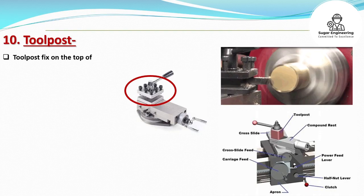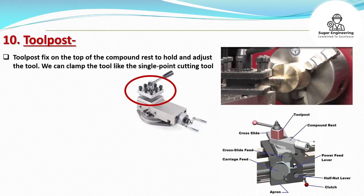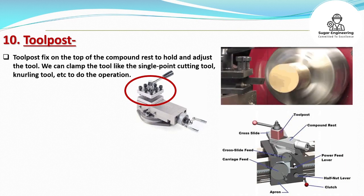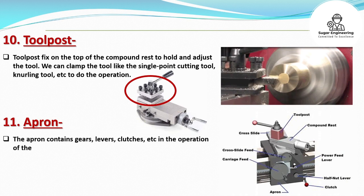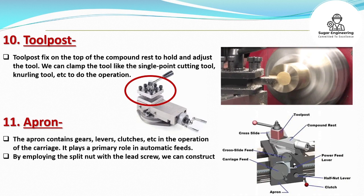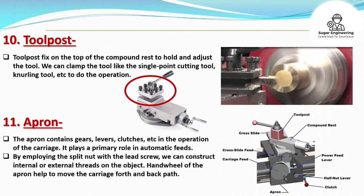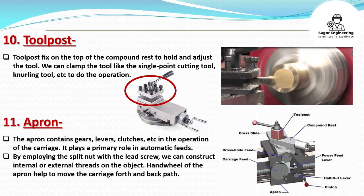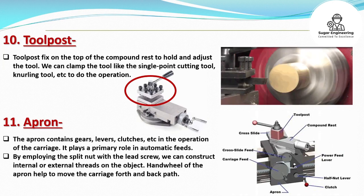The tool post fixes on the top of the compound rest to hold and adjust the tool. We can clamp tools like the single point cutting tool, knurling tool, etc. to do the operation. The apron contains gears, levers, clutches, etc. in the operation of the carriage. It plays a primary role in automatic feeds. By employing the split nut with the lead screw, we can construct internal or external threads on the object. The hand wheel of the apron helps to move the carriage forth and back.